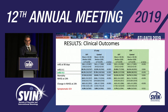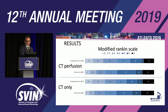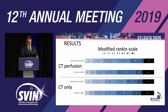In terms of safety profile, there were comparable rates of mortality across all four groups. Similarly, symptomatic hemorrhage rates were about 3 to 4% across groups, which were not statistically significant. The graded bar charts show the same data in a different format, confirming that with CT perfusion versus CT-only as an imaging paradigm, there is no difference in mRS 0–2 outcomes at 90 days.